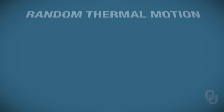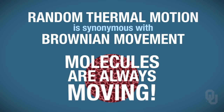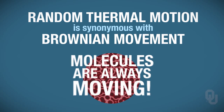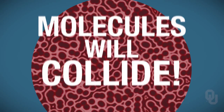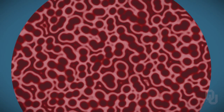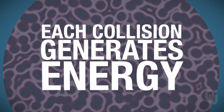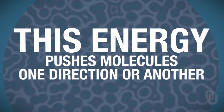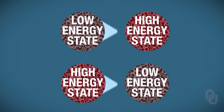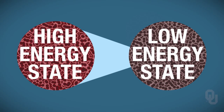When you talk about random thermal motion, remember that it is synonymous with Brownian movement. What that means is that molecules are always moving, and since they're always moving, they're going to collide. Every time they collide and bounce off one another, they generate energy. It's this energy that pushes molecules in one direction or another, and the direction molecules prefer to move is from a high energy state toward a lower energy state.